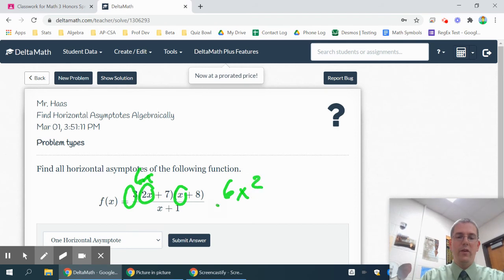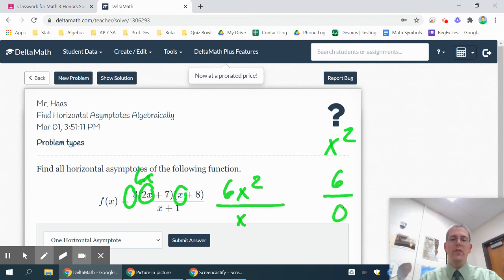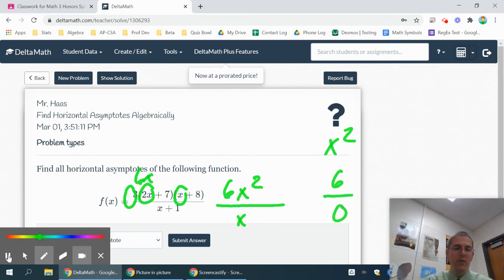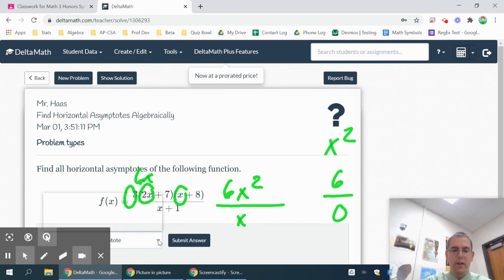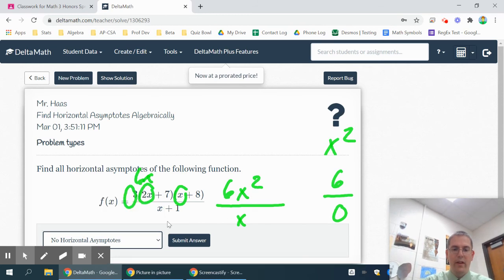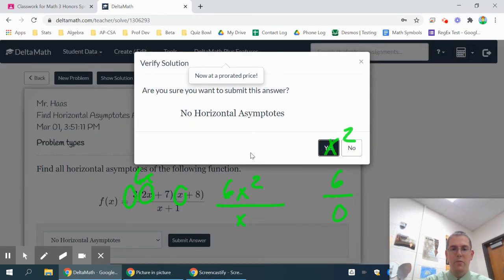So I have 6x squareds on top and an x on the bottom. Well, my highest power is x squared, and I have 6 of them on top but none on the bottom. So since I cannot divide 6 by 0, this means I cannot have a horizontal asymptote. So the answer I need to pick is no horizontal asymptotes and submit it as my answer.